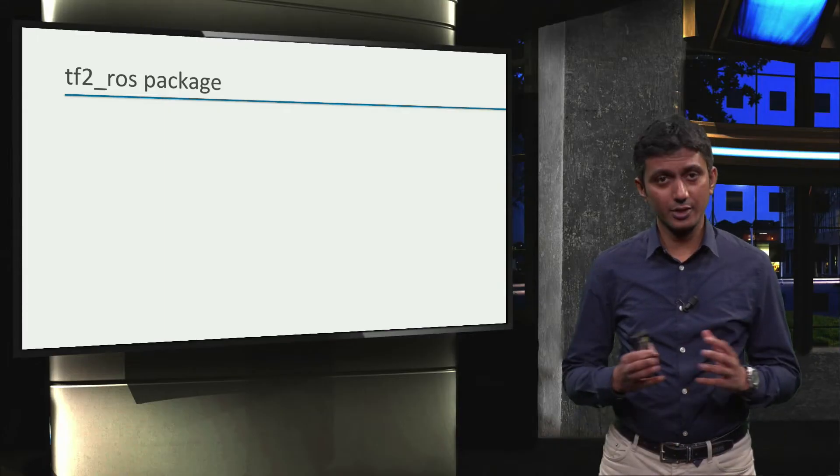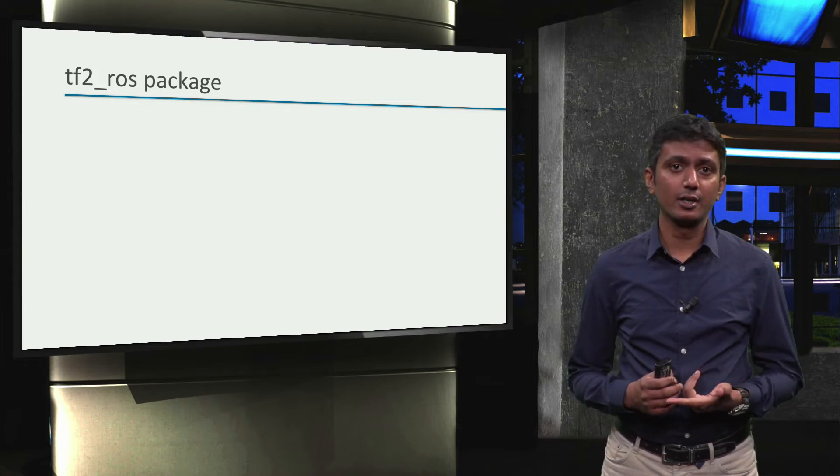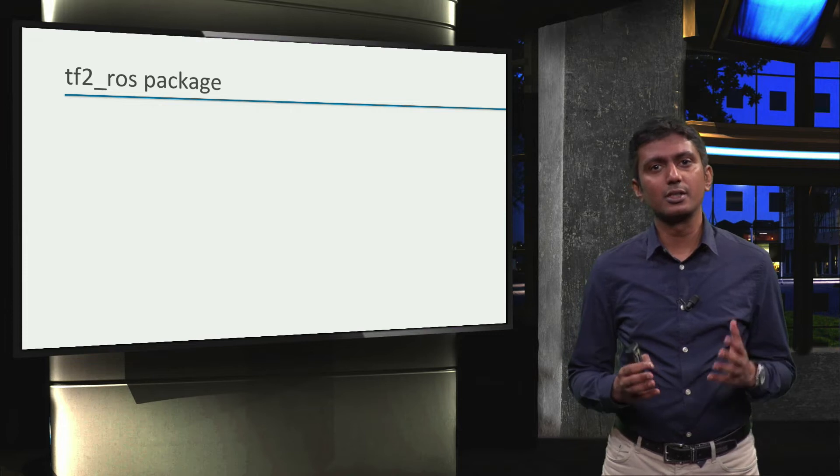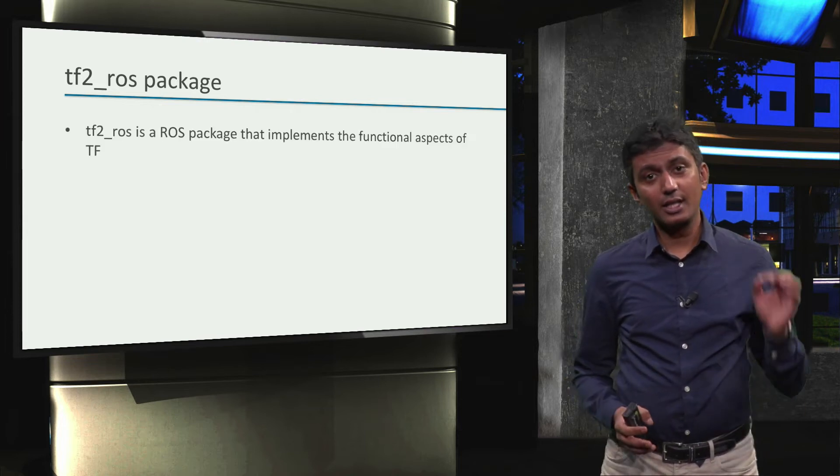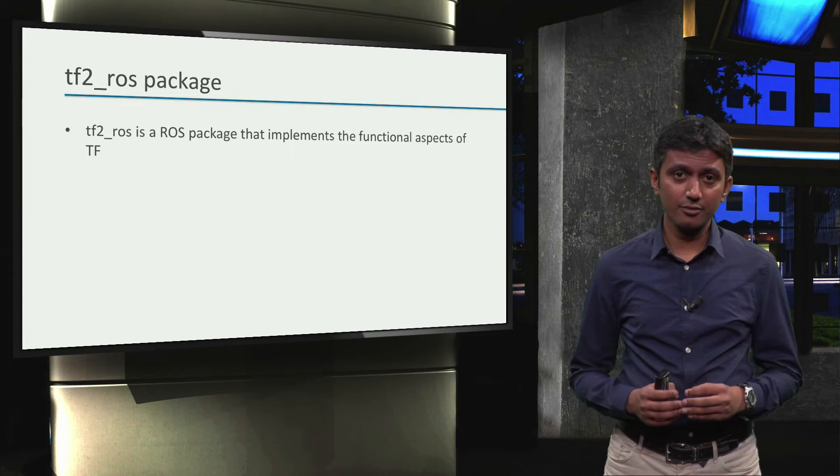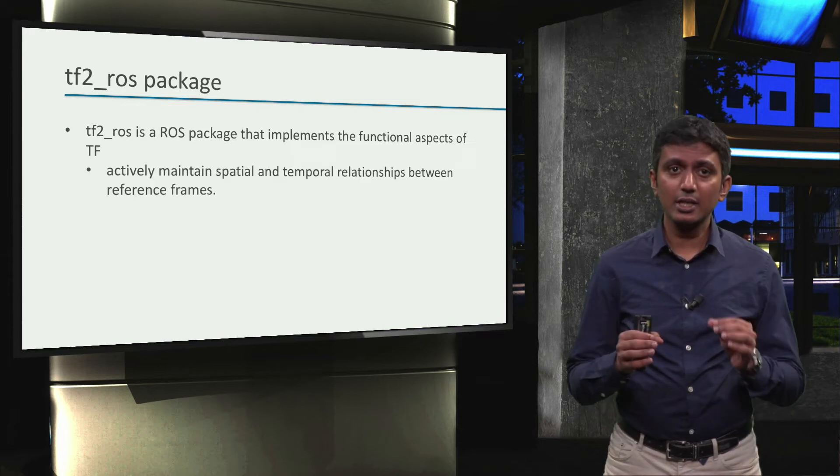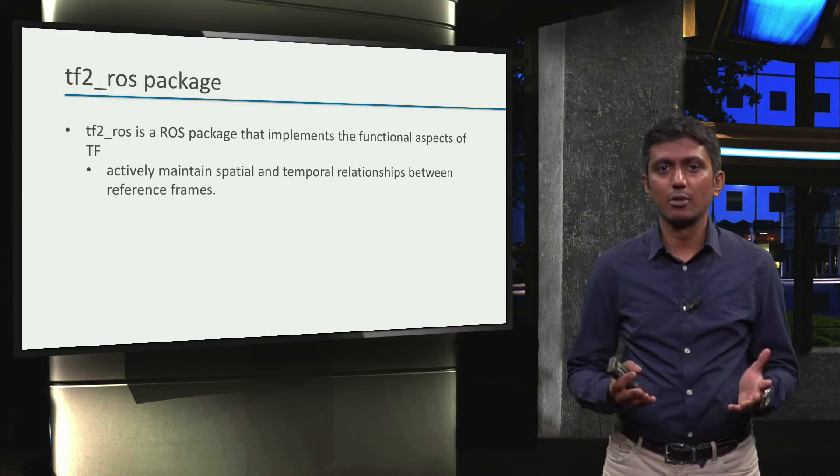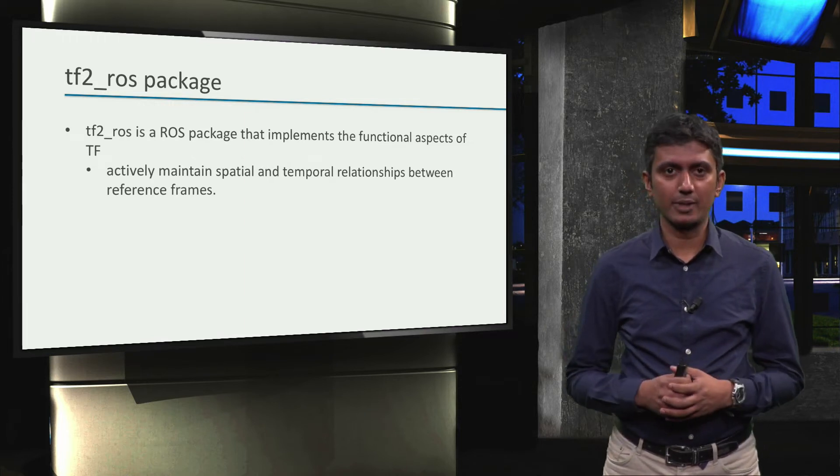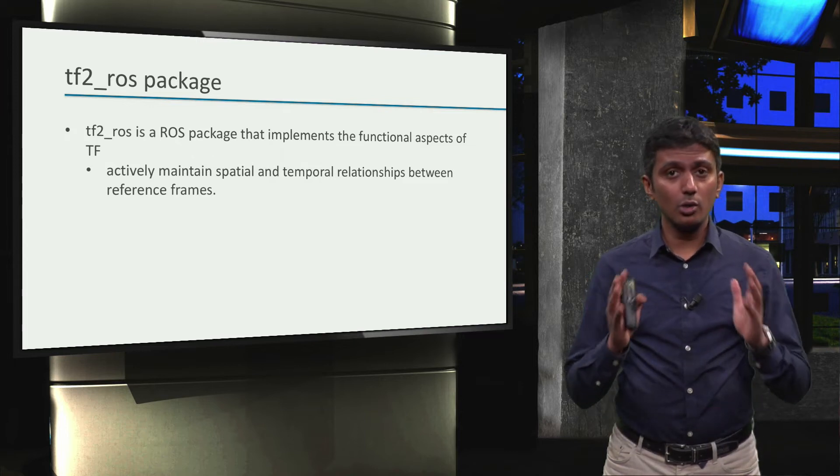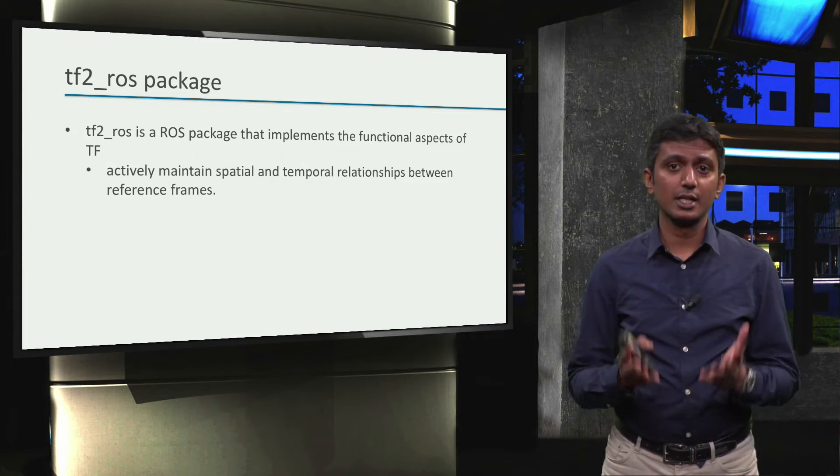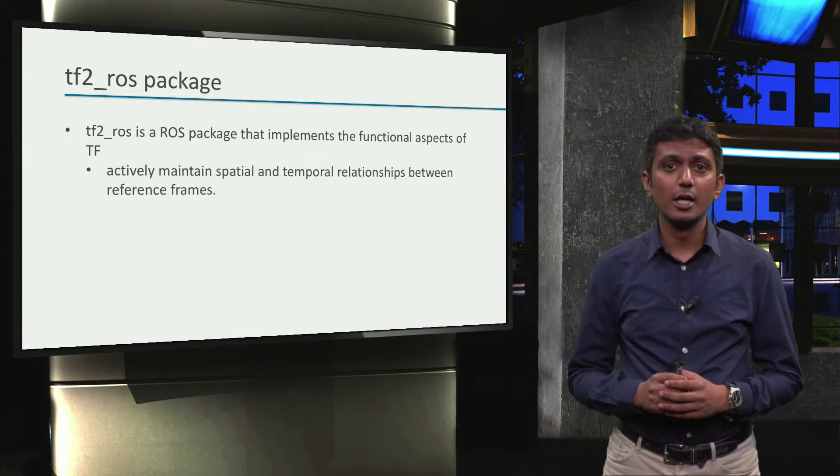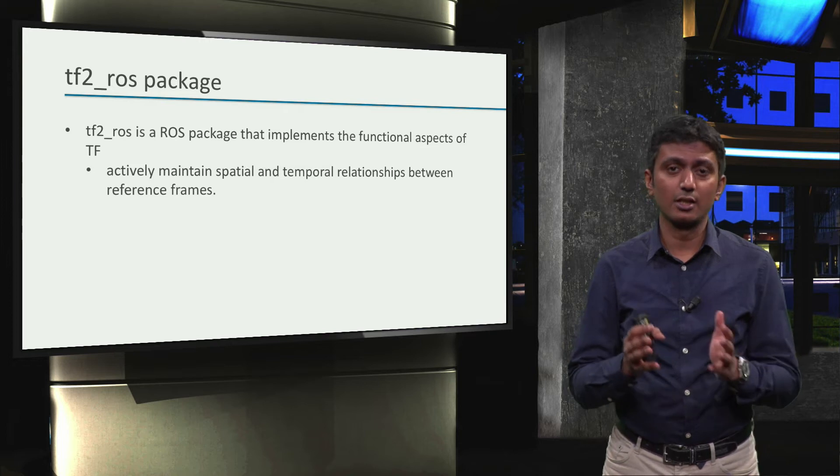We now know about reference frames, where they are defined, and how they are generated. The robot state publisher generates the different reference frames, but the actual functionality of TF, which is keeping track of the spatial and temporal relationships between reference frames, is implemented in the tf2-ros package. In other words, all the linear algebra computations necessary to find out the actual translational and rotational offsets between different objects is done with this package.